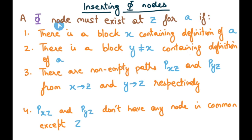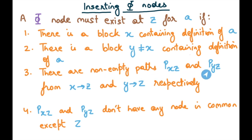To summarize: a phi node must exist at basic block z for variable a if — there is a block x containing a definition of a, a block y (not equal to x) also containing a definition of a, and there are non-empty paths pxz and pyz from x to z and y to z such that the only node they have in common is z. If all four conditions are met, a phi node must exist at z for a; otherwise the SSA representation is ill-formed.